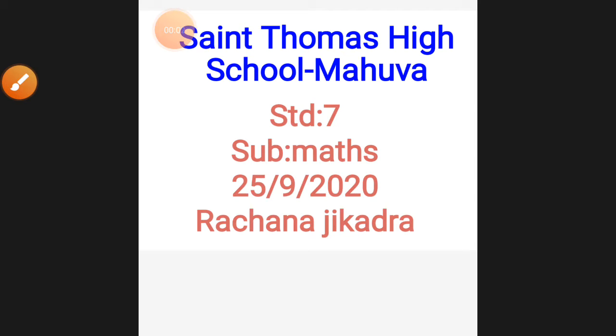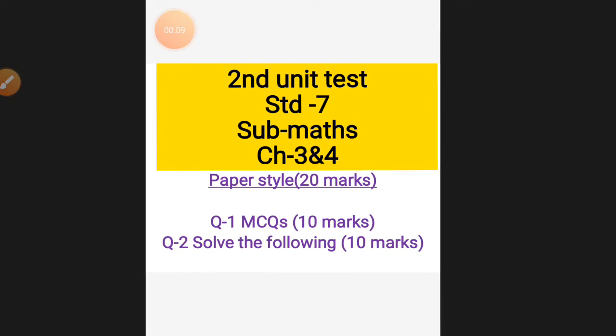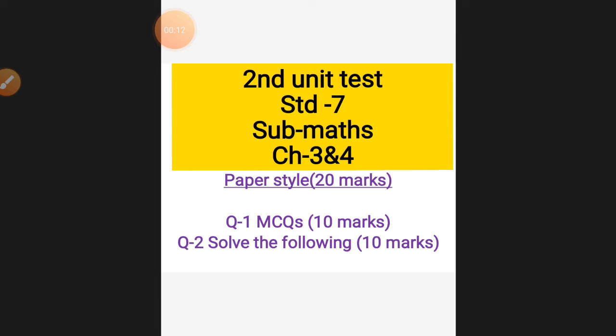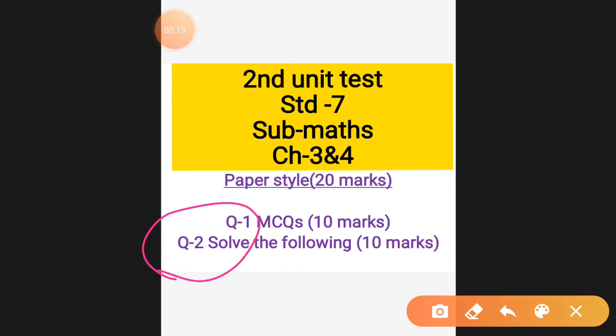Hello students, welcome back to online classes. Standard 7, subject Math. Here is the paper style of the second unit test. Two questions are there. First one, MCQs, will be of 10 marks. Each MCQ carries one mark. Second one, solve the following. So examples will be there, that is of 10 marks. Total five examples will be there, and each example carries two marks.